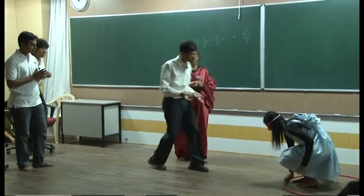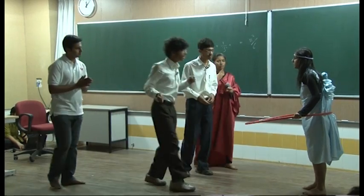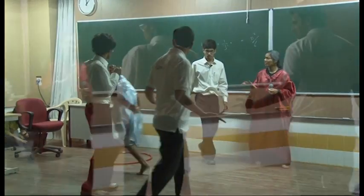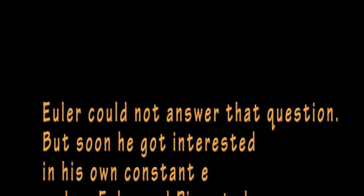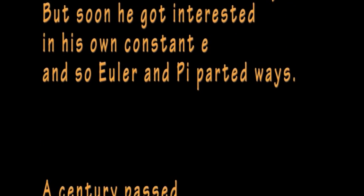But who are you? Are you 22 by 7? No, that's not me. Are you square root of 10? No. Who are you? I don't know. I don't know. Euler could not answer that question. But soon he got interested in his own constant, and so Euler and Pi parted ways.